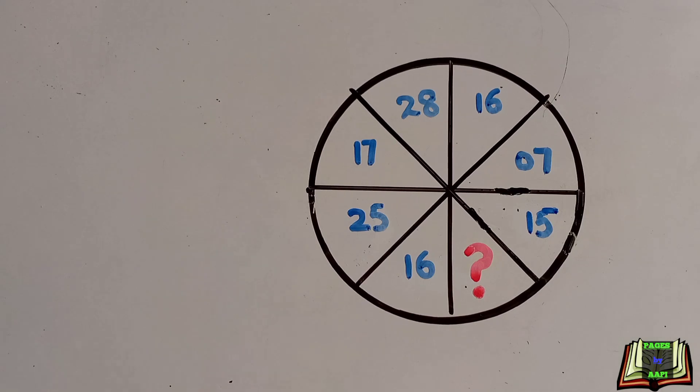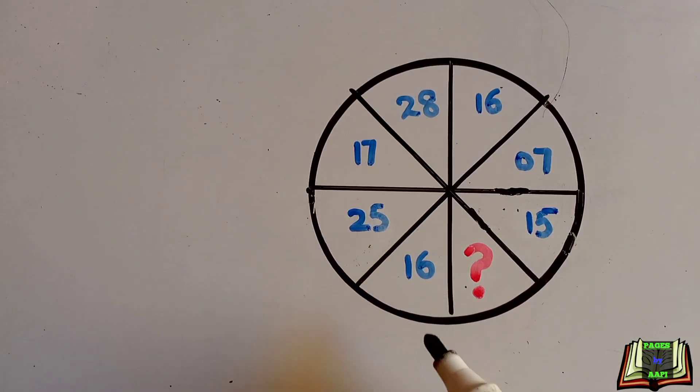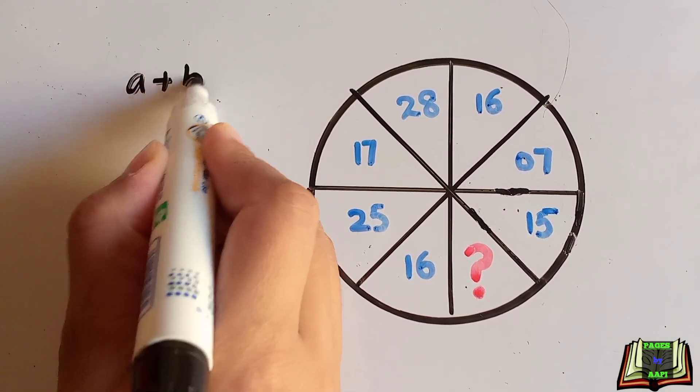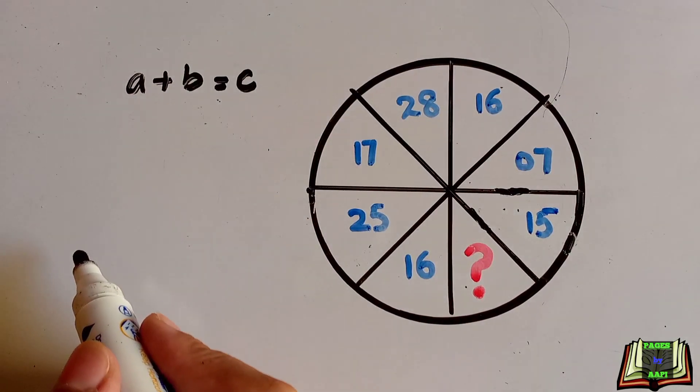That how the numbers are placed. For example, if we add 16 and 16: 32, 25 and 7: 32, 17 and 15 also makes 32. It means there is the pattern a plus b is equal to c.